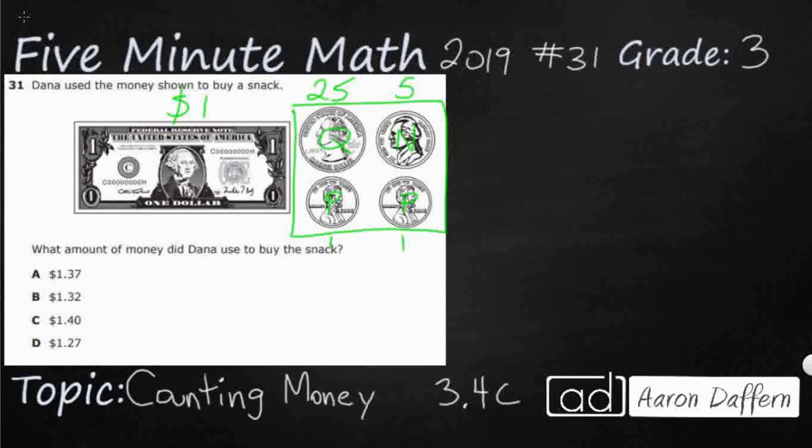Now, what we typically do is we start with our largest value. So we're going to start with 25, and then we're going to skip count by the next value. We don't have any dimes here, but we do have a nickel. So when we skip count by fives, we're going to say 25 goes up to 30. And then we're going to skip count by ones because that's what's left is our nickels. So we've got 31, and then we've got 32.